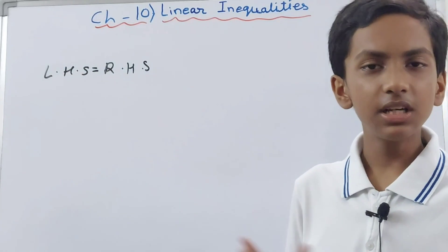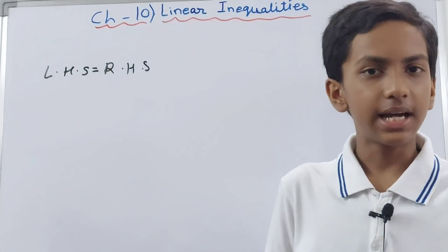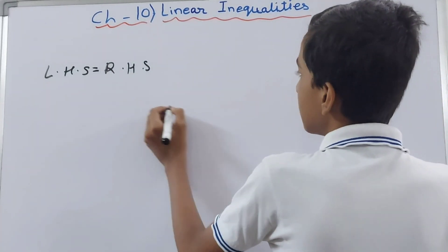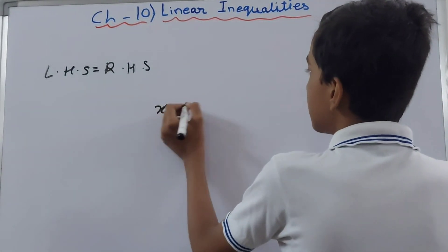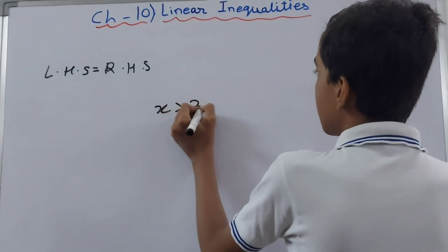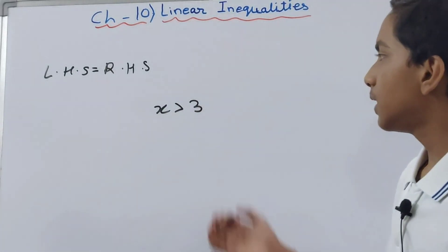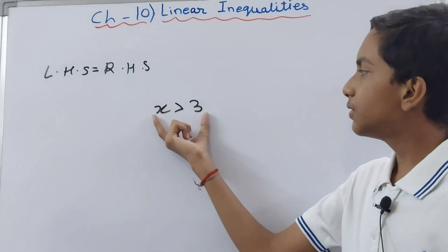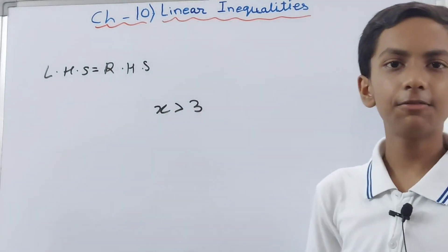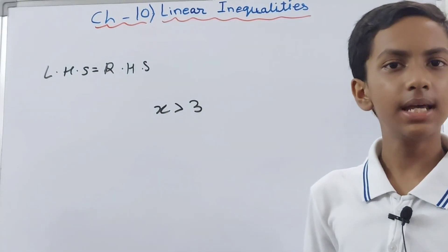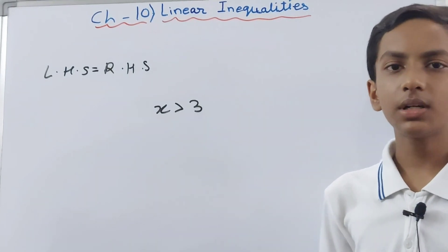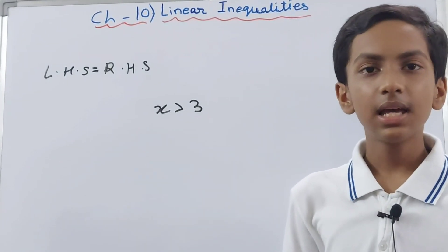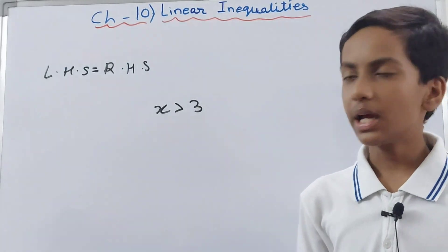In an inequality, there is no clear value of the variable. Suppose I write an inequality: x is greater than 3. You can see that we don't have any equal sign, but it is telling us that the value of x has to be more than 3. It is not telling a specified value like 4, 5, 6—it can be any number.